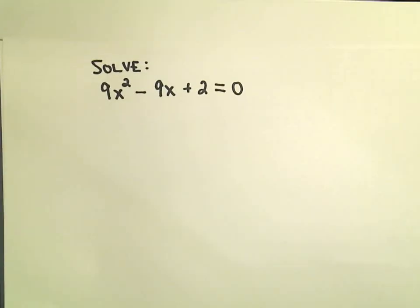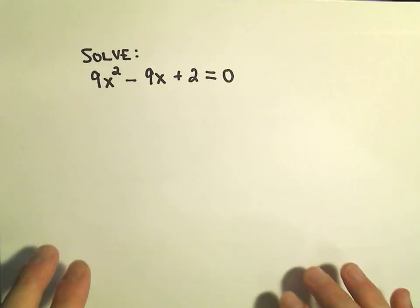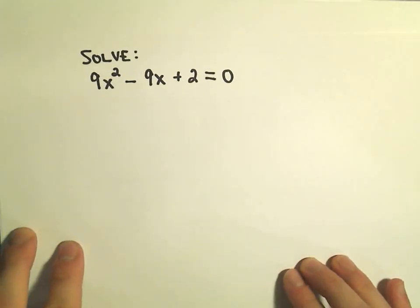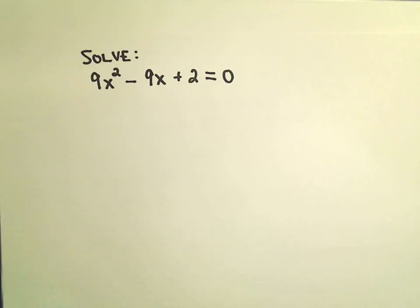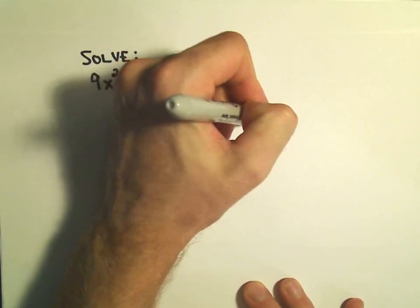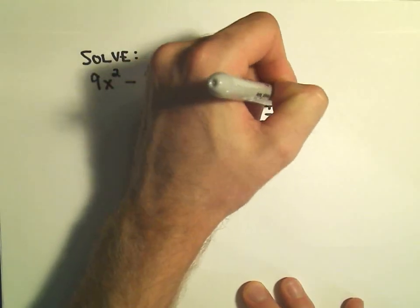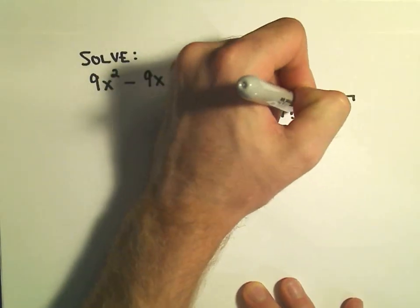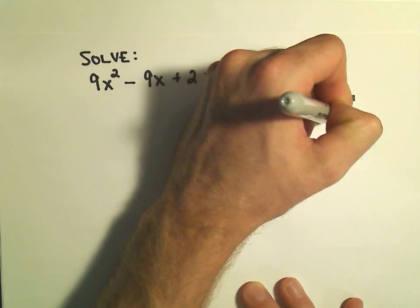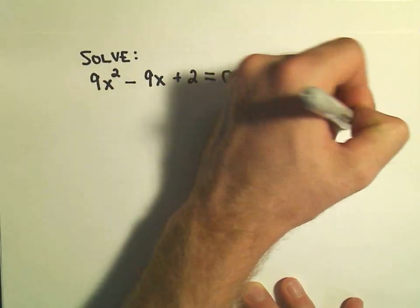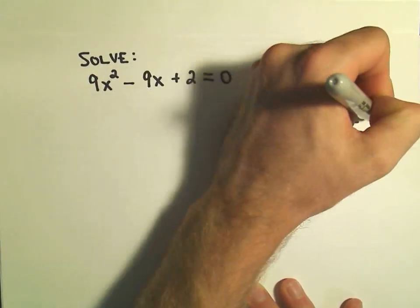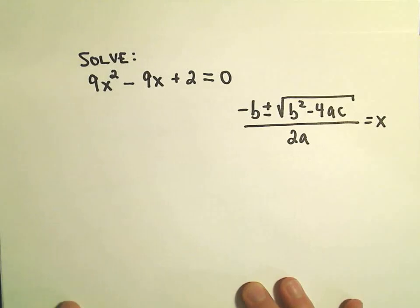So suppose we want to solve the quadratic equation 9x squared minus 9x plus 2. Maybe let's jot down the quadratic formula again off to the side. Negative b plus or minus the square root of b squared minus 4ac all over 2a. This will give us our solution.